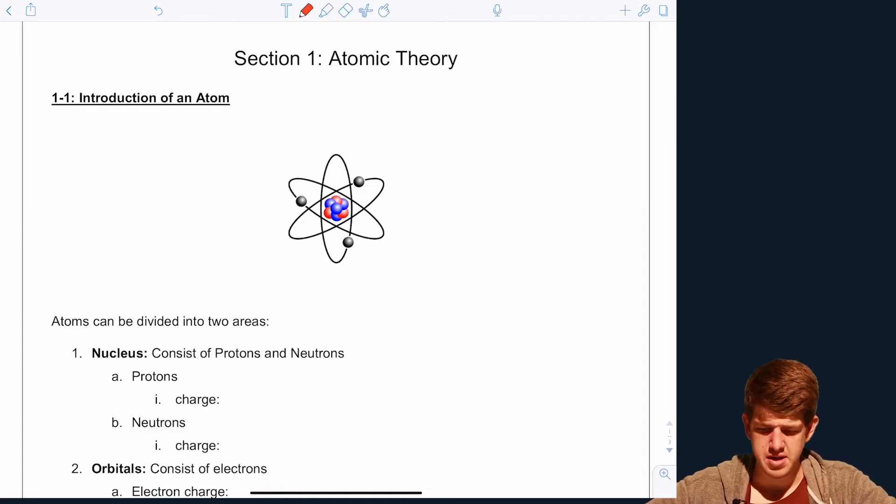So the first thing we need to do is talk about atomic theory, and there's no better way to really start with this topic than to introduce the atom. So this is the Bohr model of the atom, and because of this we can really break this atom into two different parts. We have the nucleus in the center and then we have the orbitals hanging around in the outside perimeter.